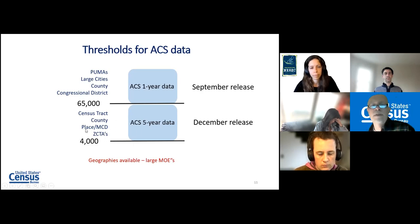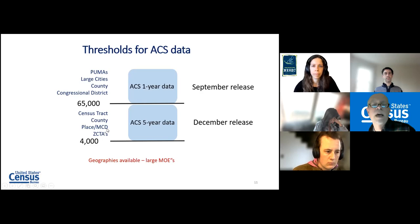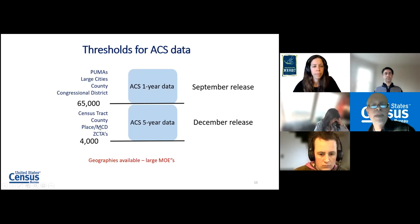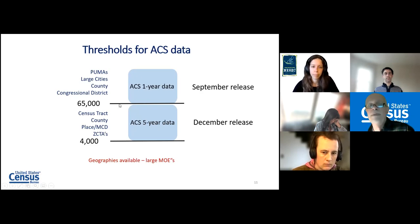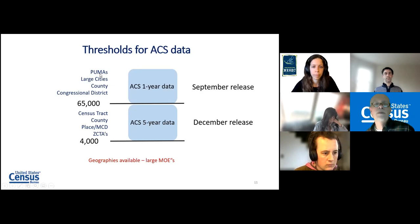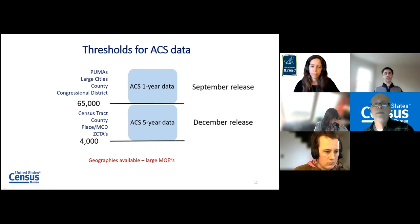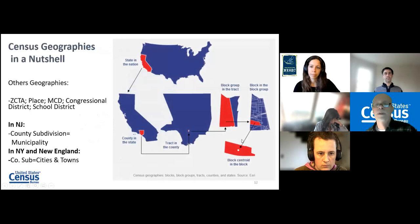On the geography side: ZIP Code Tabulation Areas, places (which in New England tend to be cities and villages), and minor civil divisions (what I call townships, or 'towns' in New England) will be in the five-year data. Rural counties will also be in five-year data, as will census tracts always. For populations above 65,000, you get one-year data — large cities, large counties, congressional districts, and PUMAs (Public Use Microdata Areas), which are large swatches of counties and tracts combined. New York City users often like PUMAs.